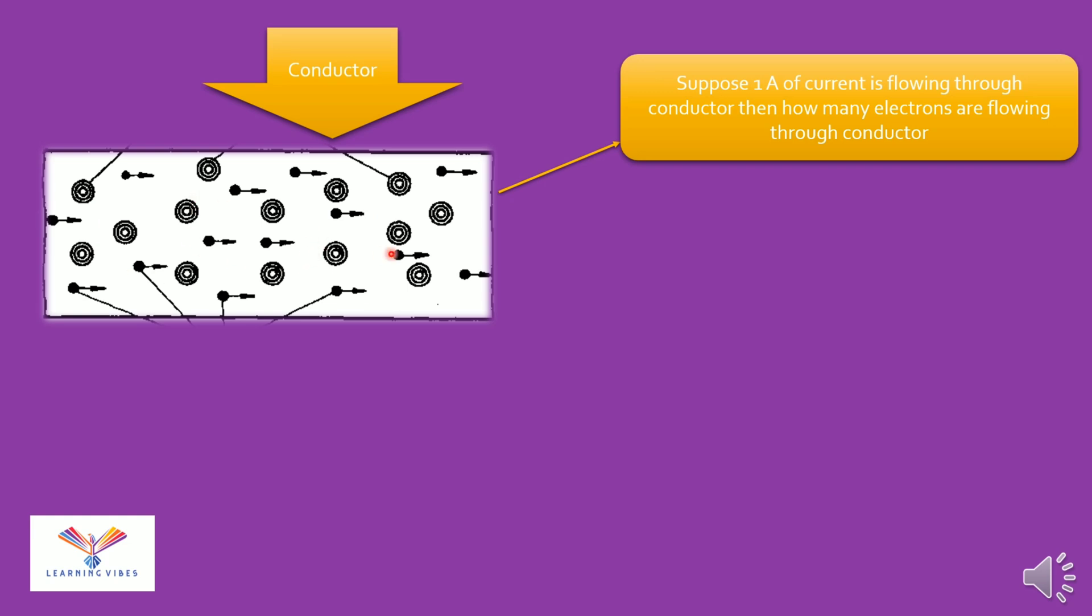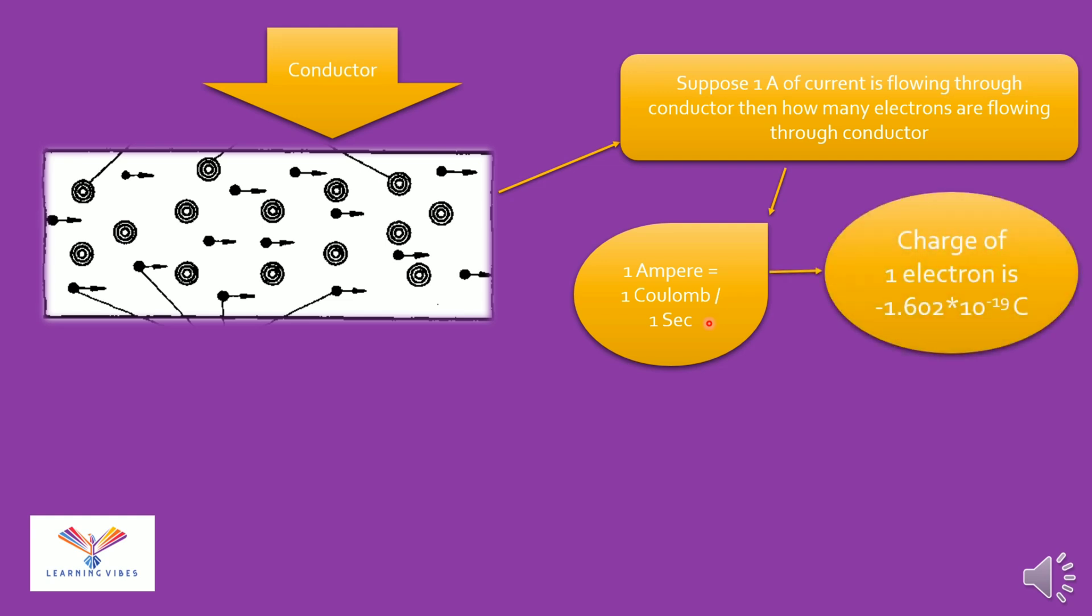But if we are saying that a current of 1 ampere is flowing through conductor, how many exactly electrons are flowing from conductor? Now let's calculate that. See, 1 ampere is equal to 1 Coulomb per 1 second. Now the charge of 1 electron is equal to minus 1.602 into 10 raised to minus 19 Coulomb.